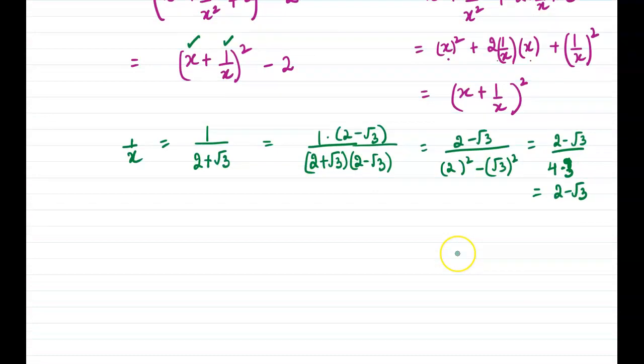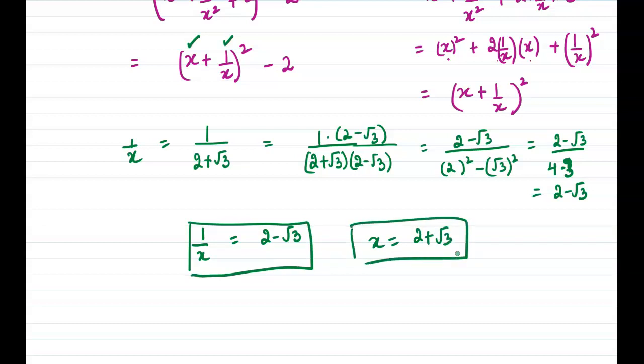So 2 - √3. So what do we get? 1/x is equal to 2 - √3, and x is equal to 2 + √3. So we have to substitute this into this. So therefore, x² + 1/x² is equal to (x + 1/x)² - 2, which we figured out earlier.